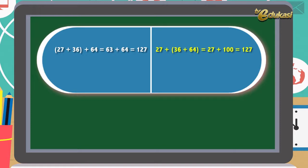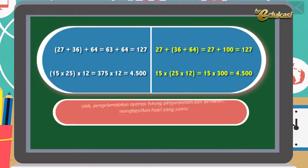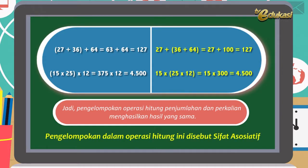Kalian bisa lihat, lebih mudah yang mana. Perhatikan yang perkalian: dalam kurung 15 x 25 dikali 12 sama dengan 375 dikali 12 sama dengan 4.500. Lihat sebelahnya: 15 dikali dalam kurung 25 x 12 sama dengan 15 x 300 sama dengan 4.500. Kalian juga bisa lihat, mana yang lebih mudah? Jadi, pengelompokan operasi hitung penjumlahan dan perkalian menghasilkan hasil yang sama. Pengelompokan ini dalam operasi hitung disebut sifat asosiatif.